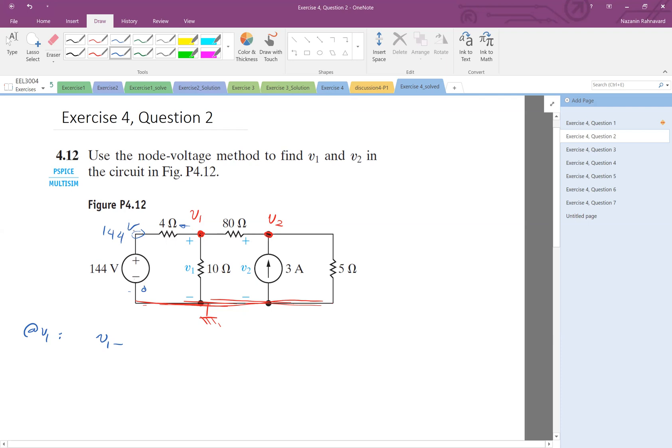Okay, so therefore V1 minus 144 divided by 4, this voltage minus that voltage divided by the resistance, plus V1 minus 0 divided by 10, plus current in this direction equals zero.